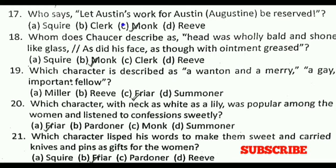Next question: Which character is described as 'a wanton and a merry, a gay important fellow'? The correct answer is C, that is the Friar. Next question: Which character, with neck as white as a lily, was popular among the women and listened to confessions sweetly? The correct answer is A, that is the Friar. Next question: Which character lisped his words to make them sweet and carried knives and pins as gifts for the women? The correct answer is B, that is the Friar.